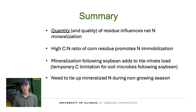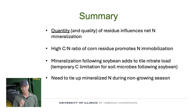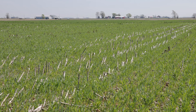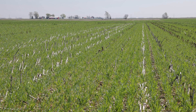Nitrate can come from either mineralization or fertilizer — it's all available to be leached if there's enough moisture — and so we still find tile nitrate coming out following soybean. In summary, both the quantity and quality of crop residues influences net soil mineralization. The high carbon to nitrogen ratio of corn residue clearly promotes nitrogen immobilization. Soil mineralization following soybean production can potentially be reducing our soil carbon over time, and that might be the source of tile nitrate following soybean. We clearly need to tie up nitrate during the non-growing season, and cover crops might be the best strategy for addressing that leak we have now identified.